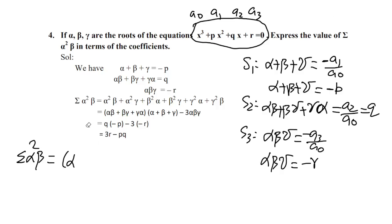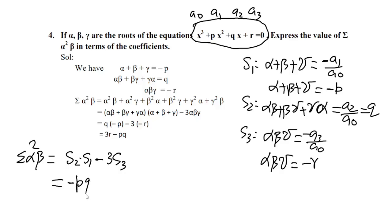So Σα²β = S1·S2 − 3·S3. Here S2 is q, S1 is p (= −p), and S3 is −r. Therefore the answer is S1·S2 − 3·S3 = (−p)(q) − 3(−r) = −pq + 3r. So minus pq plus 3r, with S3 as the final answer.